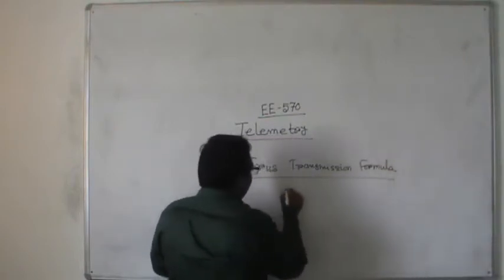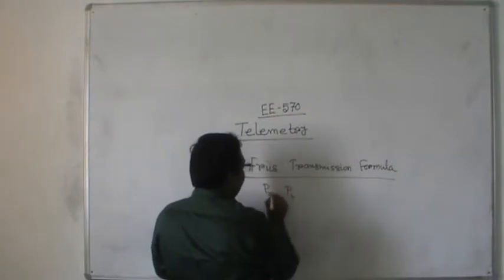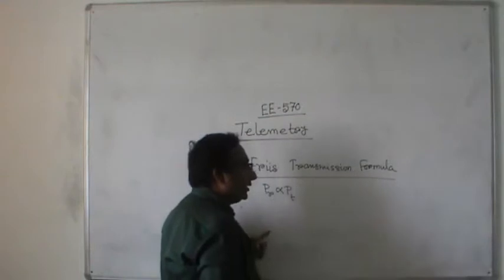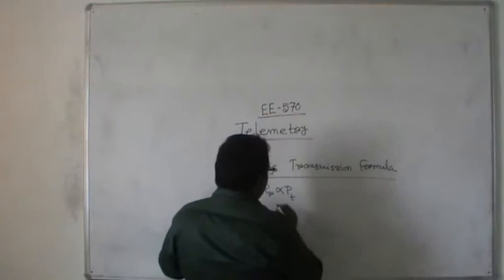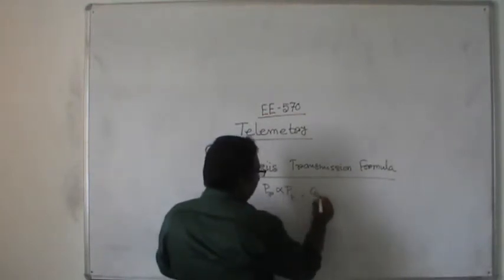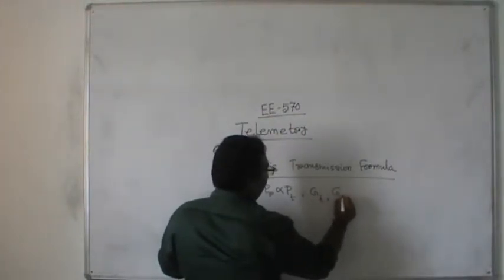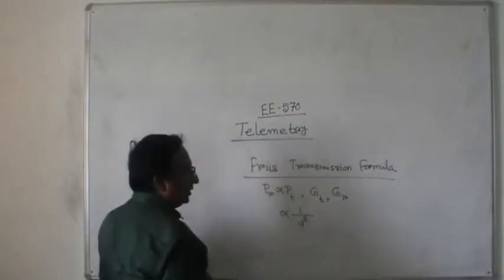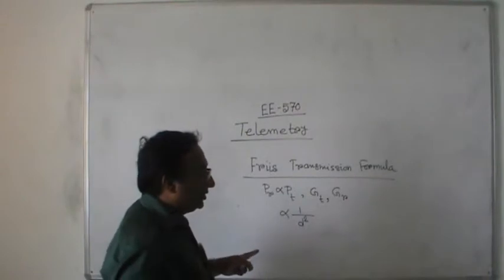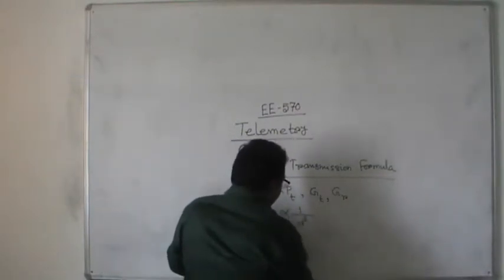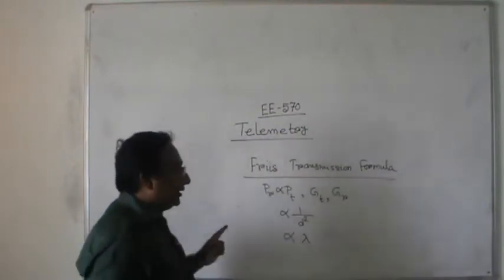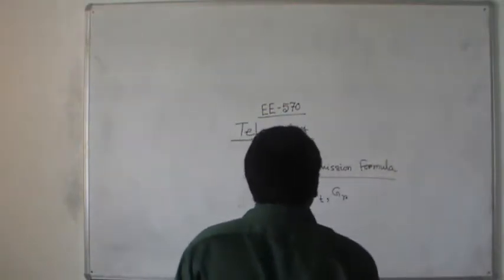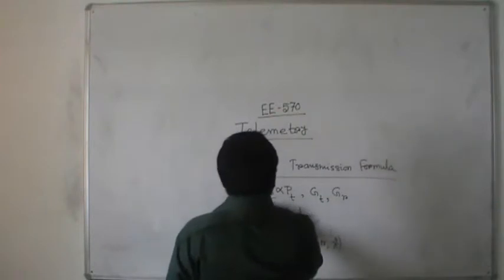In the Friis transmission formula, PT and PR are two types of power — received power and transmitted power — both in the range of milliwatt, microwatt, or nanowatt. PR is directly proportional to PT, the gain of the transmitting antenna GT, the gain of the receiving antenna GR, and lambda squared (wavelength squared), and inversely proportional to the square of the distance between the transmitting and receiving antenna.